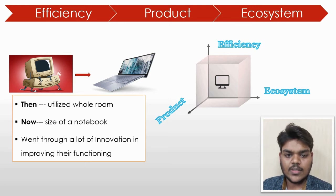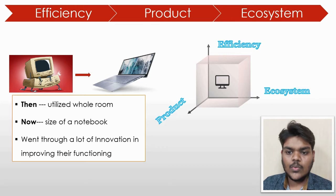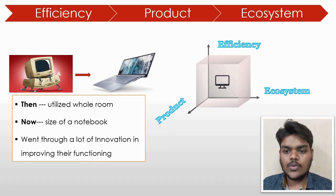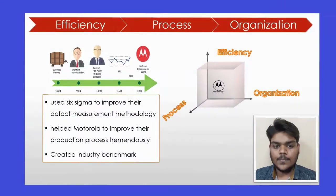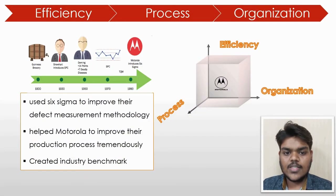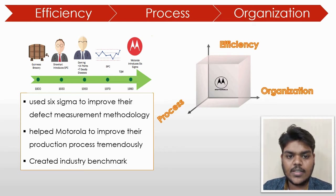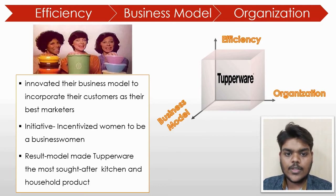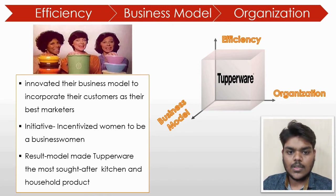Next is efficiency-product-industry: computers. Computers evolved from filling an entire room to the size of a notebook, with innovations improving functioning and providing companies opportunities to invest more in R&D. Next is efficiency-process-organization: Motorola used Six Sigma to improve their defect measurement methodology, creating an industry benchmark that affected not just manufacturing but overall management. Next is efficiency-business-model-organization: Tupperware. Tupperware innovated their business model by incorporating customers as marketers, incentivizing women — the primary purchasers — to become businesswomen who could sell Tupperware products and earn extra money, making it the most sought-after kitchen and household brand.